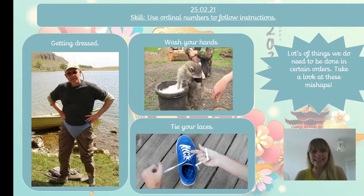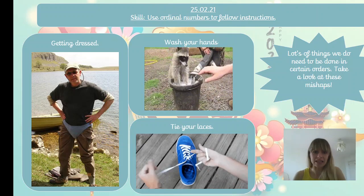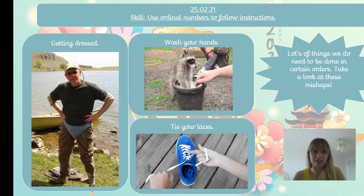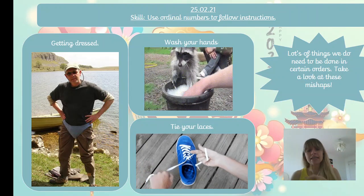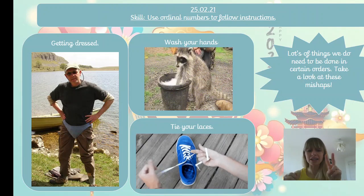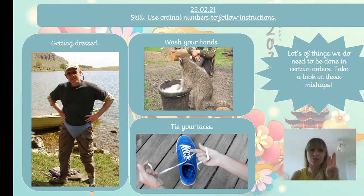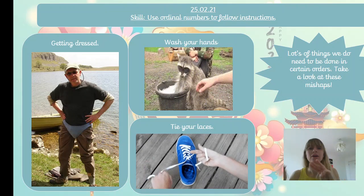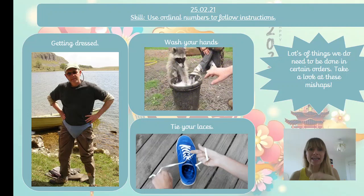And tying your laces needs to be done in a certain order. So first, we tie a knot. Second, we loop it around our fingers. And third, you need to make another loop to get it right — you don't just let go.